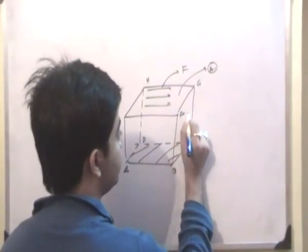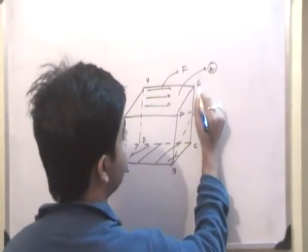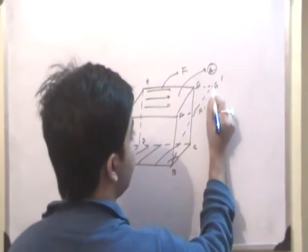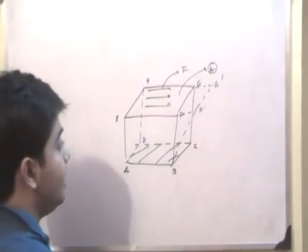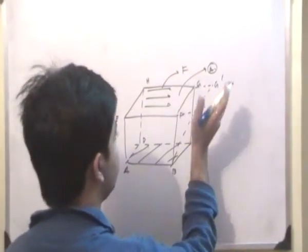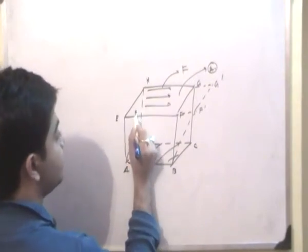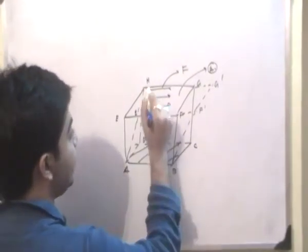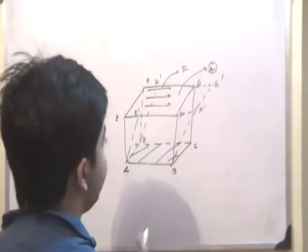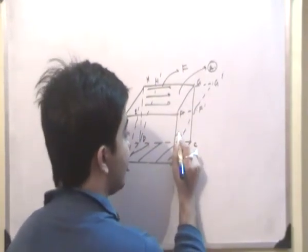Basically, BF will shift to BF′ and CG will shift to CG′. So there is a relative displacement of the plane from BF to BF′ and CG to CG′. Similarly, AE will shift to AE′ and DH will shift to DH′. So there is a relative displacement of this plane from here to here.